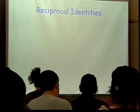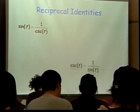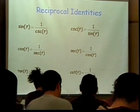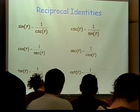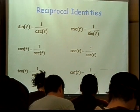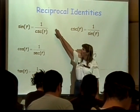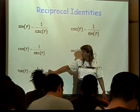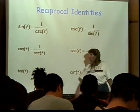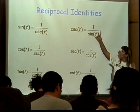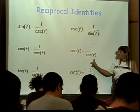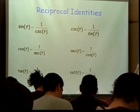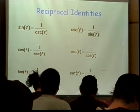Reciprocal identities — this is what your book calls reciprocal identities; I call some of them definitions. So the sine of an angle is the same as 1 over the cosecant of the angle, the cosine is 1 over the secant of the angle, the tangent of the angle is 1 over the cotangent, the cosecant is 1 over the sine, the secant is 1 over the cosine, and the cotangent is 1 over the tangent. You should have all those down — they're basically definitions.